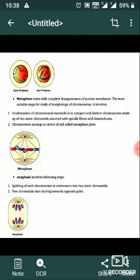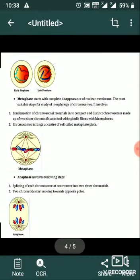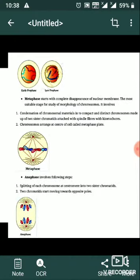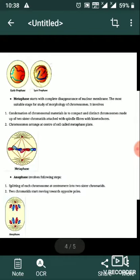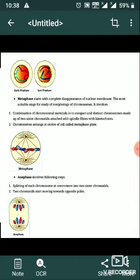Metaphase starts with the complete disappearance of the nuclear membrane. It is the most suitable stage for studying the morphology of chromosomes. It involves condensation of chromosomal material into compact, distinct chromosomes made up of two sister chromatids attached with spindle fibers at kinetochores.